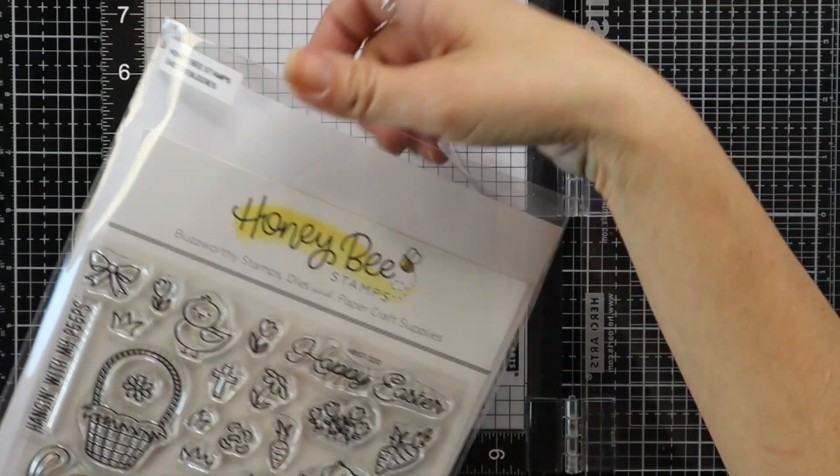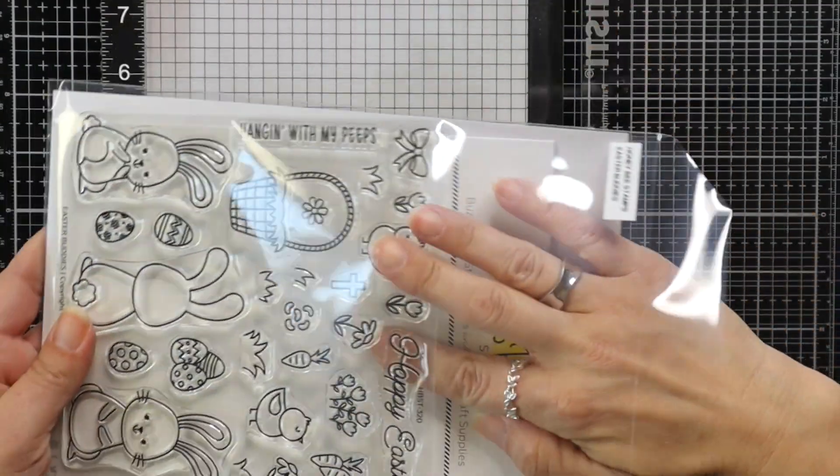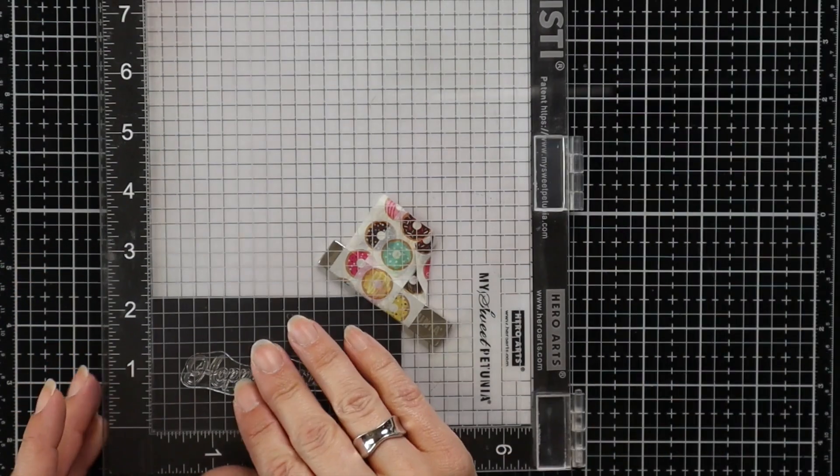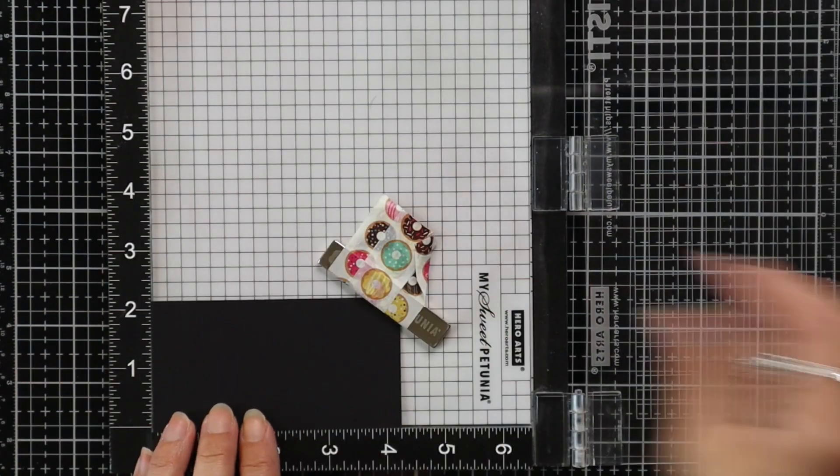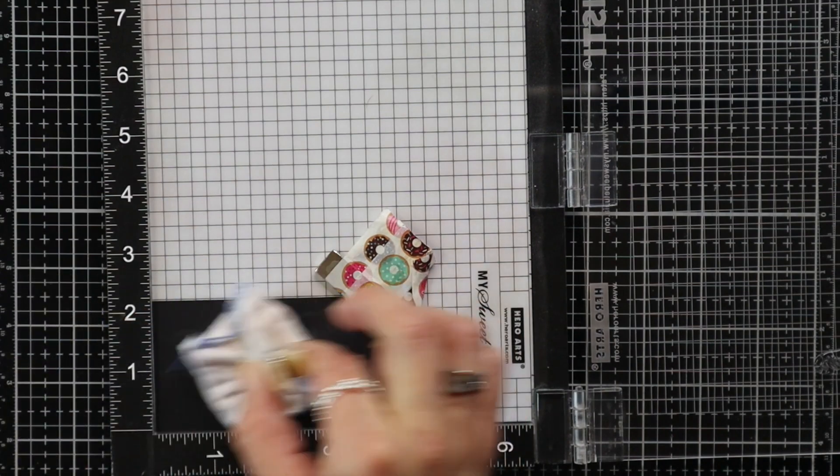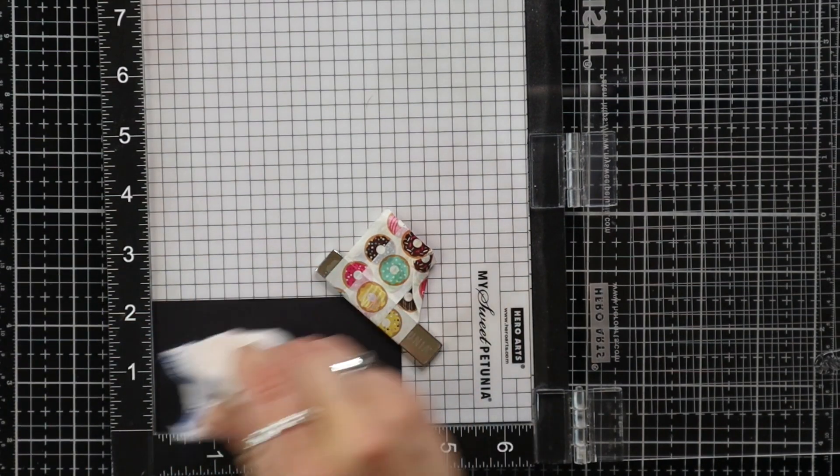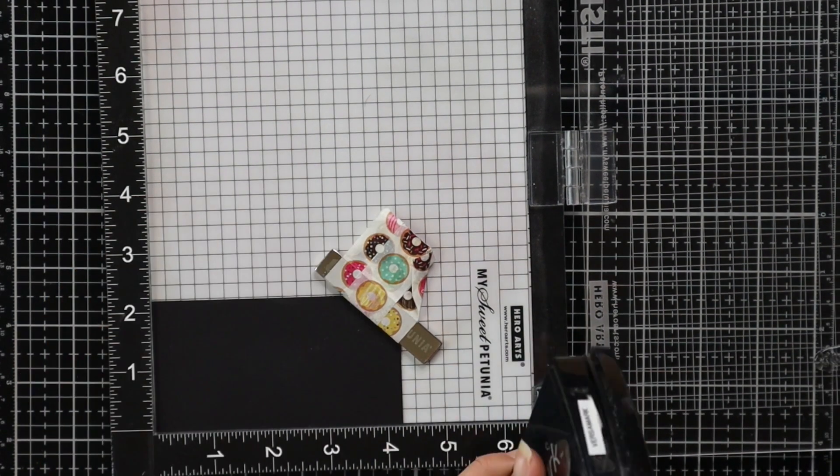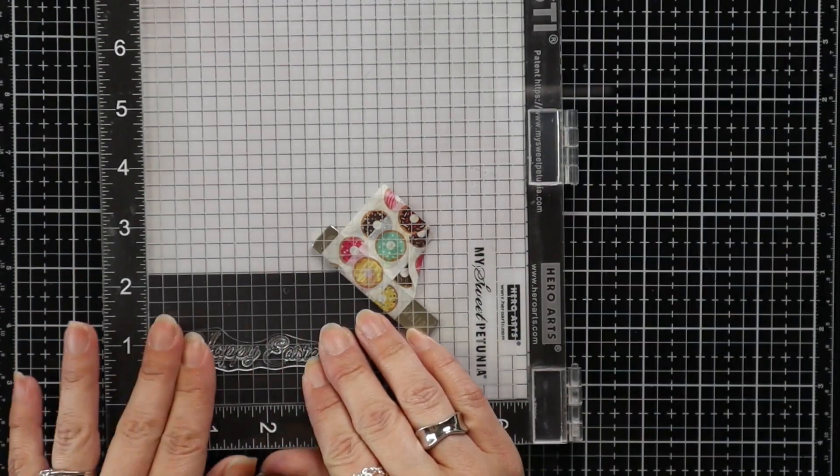So while I'm waiting for this to dry I'm going to work on a sentiment. I really want to keep the focus on this beautiful bright spring background so I am keeping my sentiment really simple. I am using the Easter Buddies stamp set and just using this sentiment that says Happy Easter. I have a small piece of black cardstock here that I lined up my sentiment on. I'm going to prep that with an anti-static powder tool. Ink up the sentiment with the Versamark ink and stamp that down onto the cardstock.